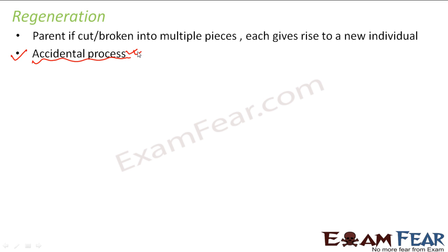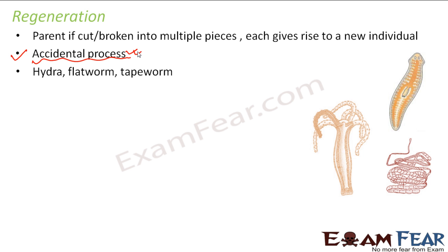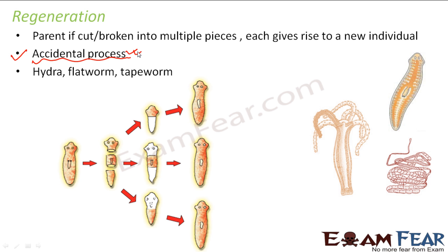There is no organism which depends only on regeneration for reproduction. Regeneration happens by specialized cells that have the capability to develop into different body parts, and this development of each part into an entire organism is known as development. This is seen in organisms like hydra, flatworms, and tapeworms — but those organisms also have other ways of reproducing. For example, hydra can reproduce by budding as well as by regeneration.